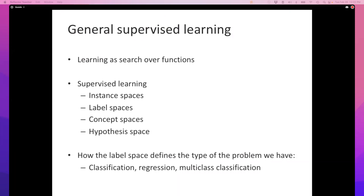Typically when we talk about instances, we talk about features that encode them. We convert instances into some vector space. For the beginning of the semester, we assume these feature vectors are given — some domain expert thought hard about the problem and invented them. Later we'll talk about learning feature vectors as part of the learning problem itself. On the output side, we have labels — the outputs of the models we train.